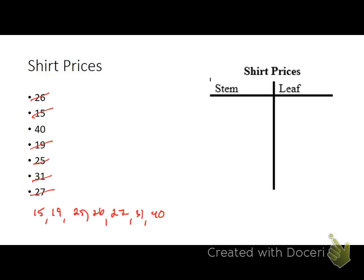So, we have some tens. We have some twenties. We have some thirties. And we have some forties. And we can create other stems if we want, but we're not going to have any data pieces in it, so it doesn't really matter. So, there are all of our stems. And then, in order, we want to write out our leaves. So, there's a five. And then, a nine in the tens. So, it's 15 and 19. And then, we have a 25, a 26, a 27. And then, we have a 31. And then, we have a 40.